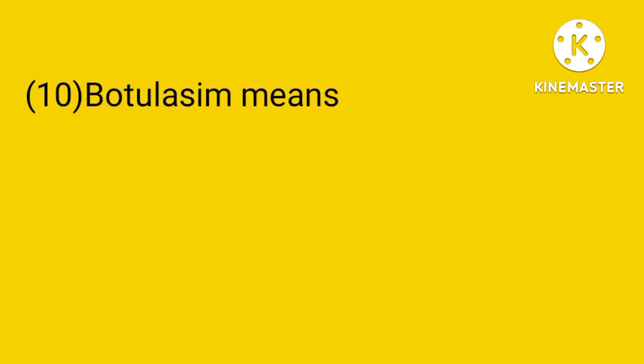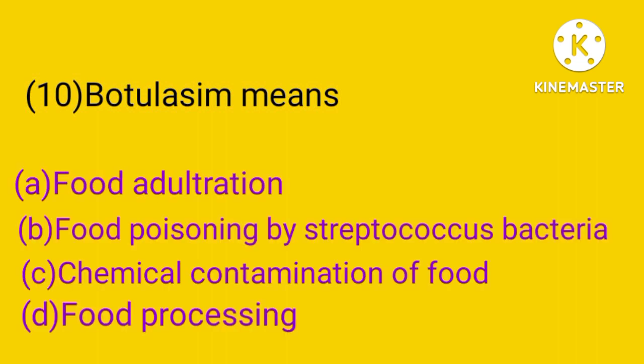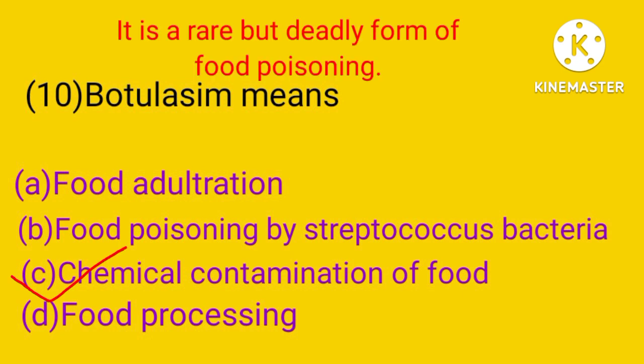Number 10. Botulism means: food adulteration, food poisoning by Streptococcus bacteria, chemical contamination of food, or food processing. The answer is C. Botulism means chemical contamination of food, and it is a rare but deadly form of food poisoning.